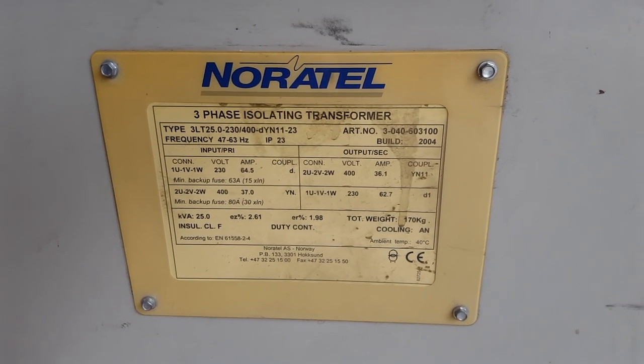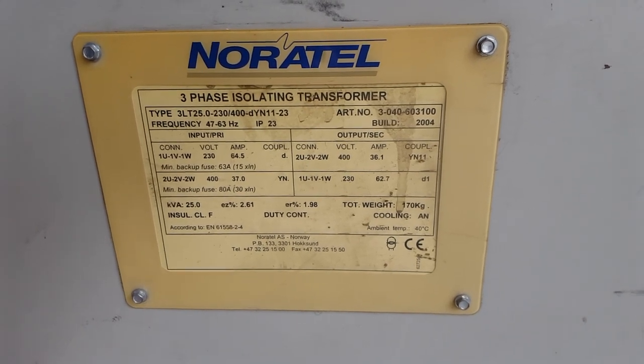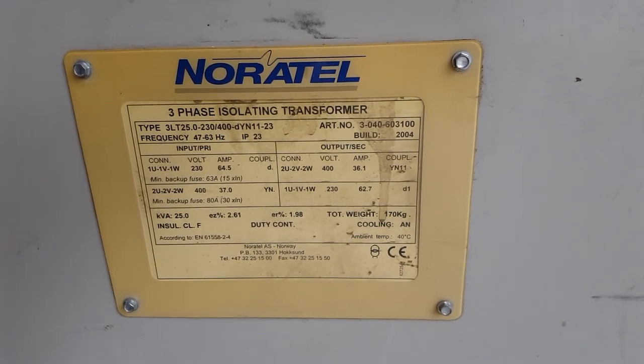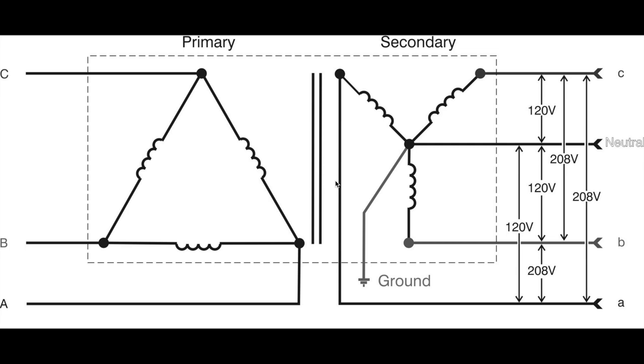So let's take a look at how such a transformer works internally. I found this drawing on the internet which looks very similar to how the transformer I am using works. Don't mind the figures here on the right side, those voltages are different for the transformer I am using. But the important part is it shows the delta on the primary side and the Y configuration on the secondary side.